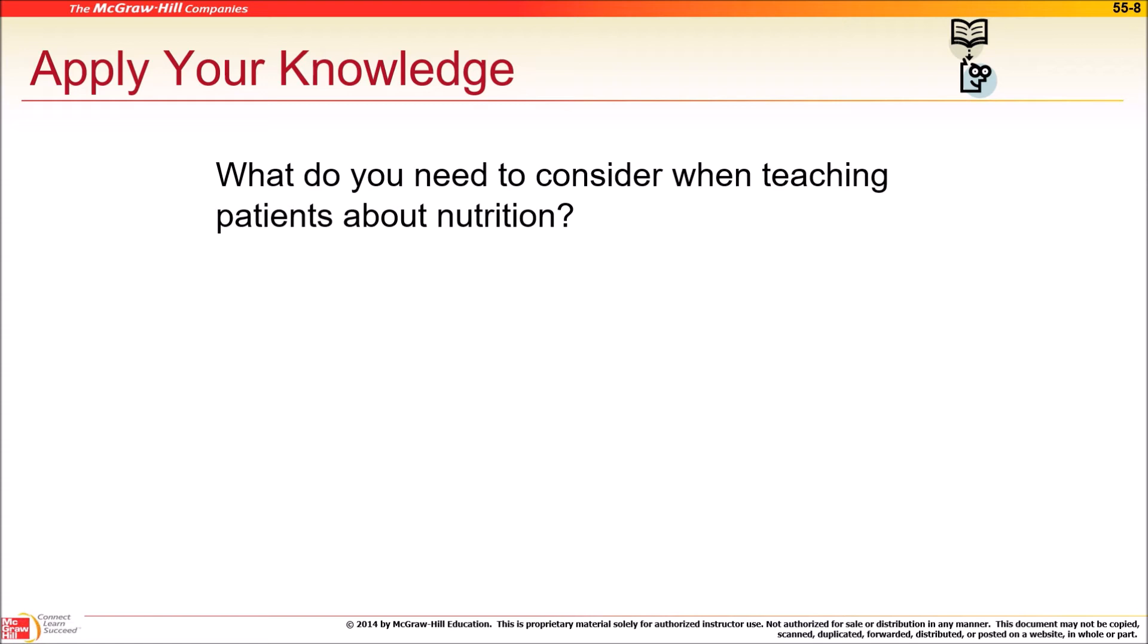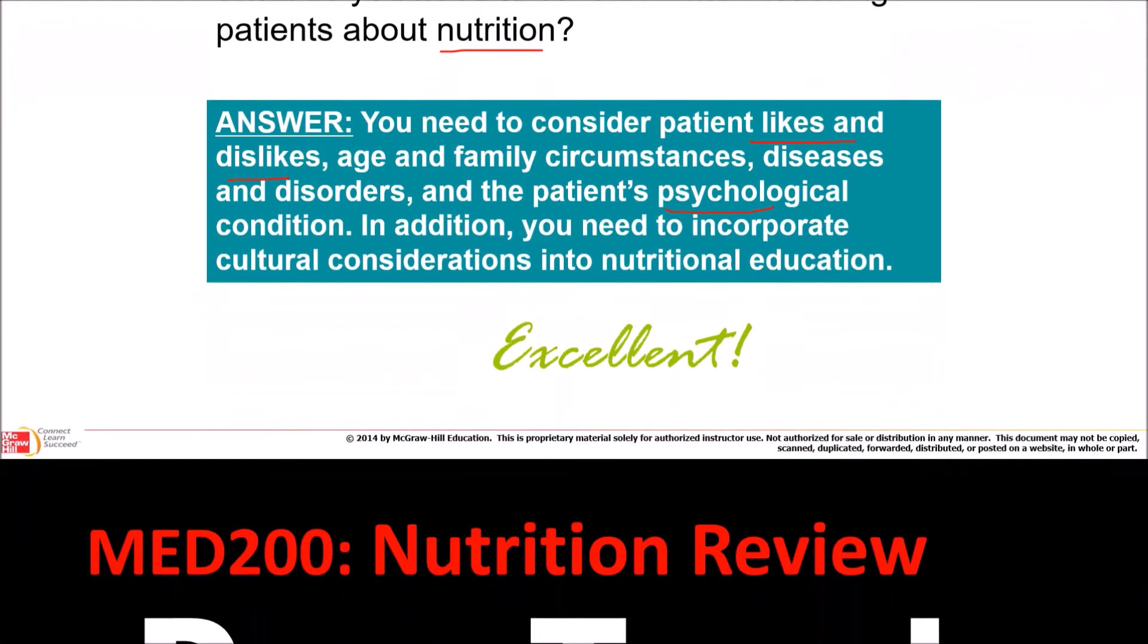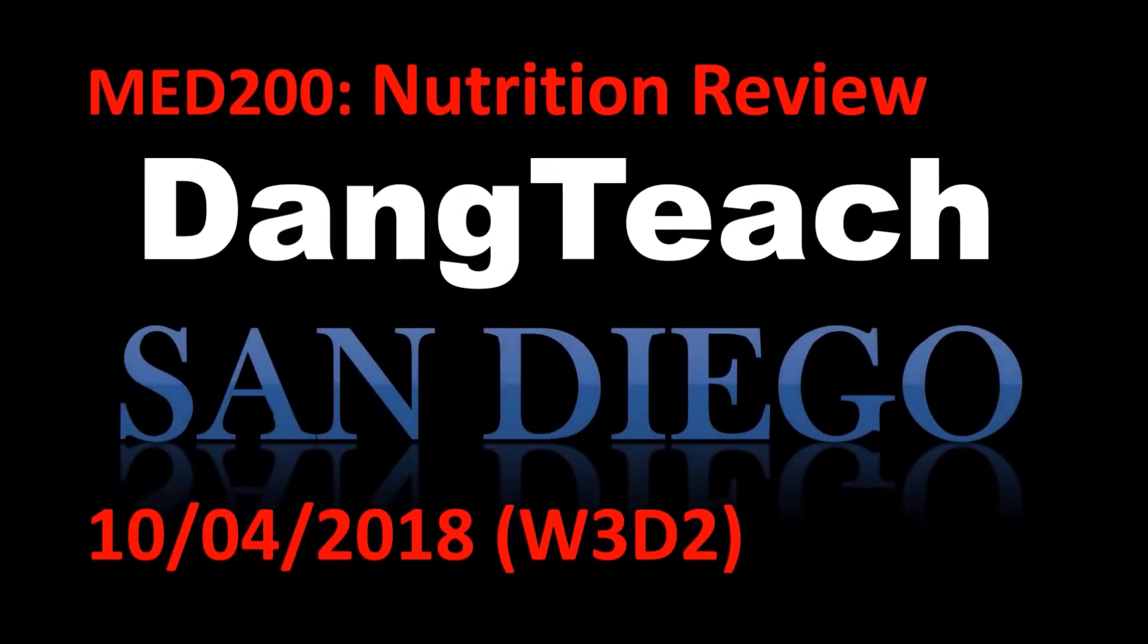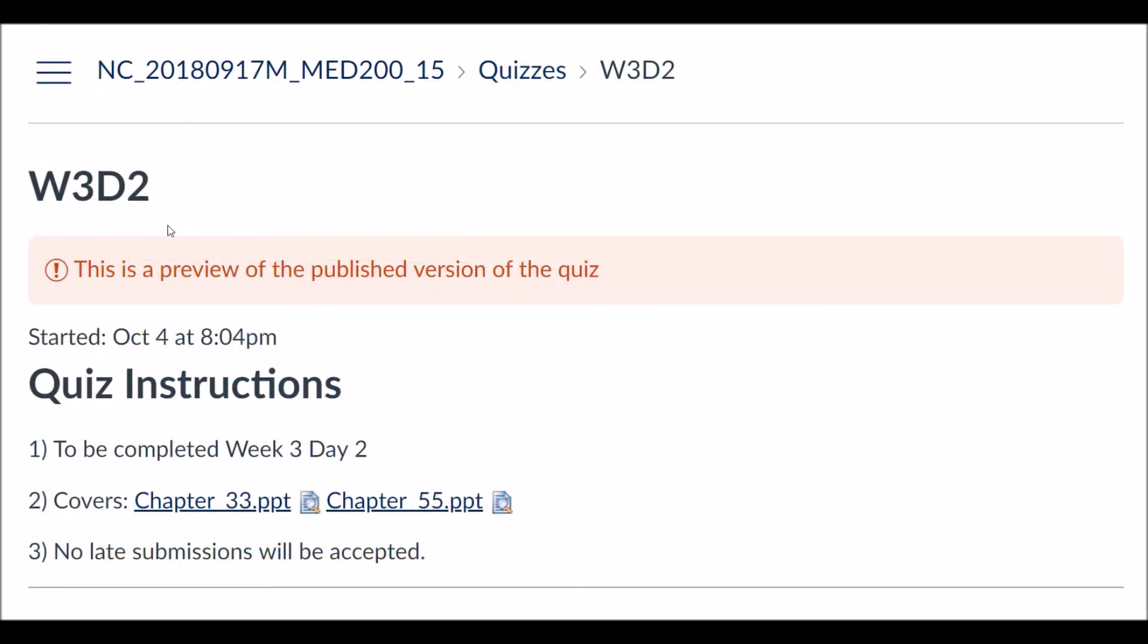What do you need to consider when teaching patients about nutrition? Well, everything, right? Name one thing. Age, weight, current health. It's pretty much the same. Let's see how different they want us to answer this one. Their likes. It's the initial thing we answered in the previous question, but more patient-focused. The assignment, week three day two, your access code is 200.